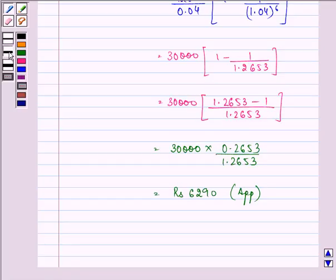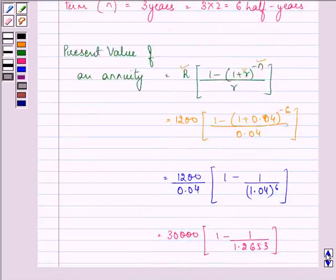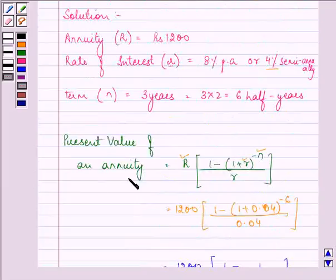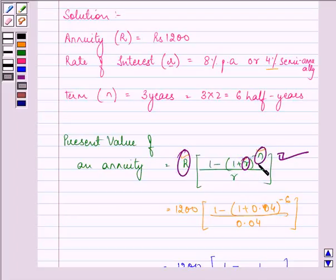And this is the required answer to the given question. Right, so hope you enjoyed this session and understood it well. We have to remember the formula to find out present value of an annuity and you will be given the value of R, that is the periodic payment, the small r, that is rate of interest and n, that is the time period in the question.